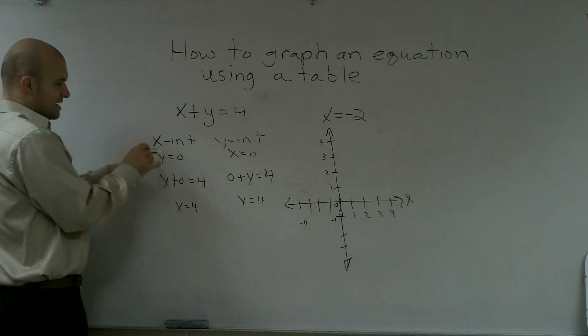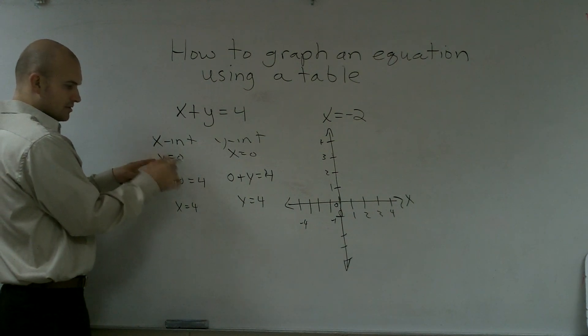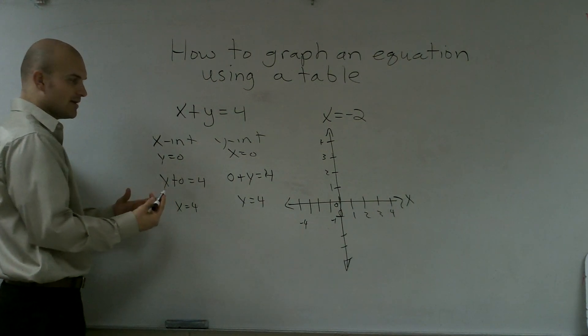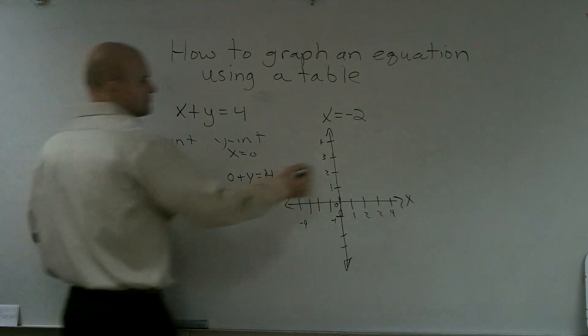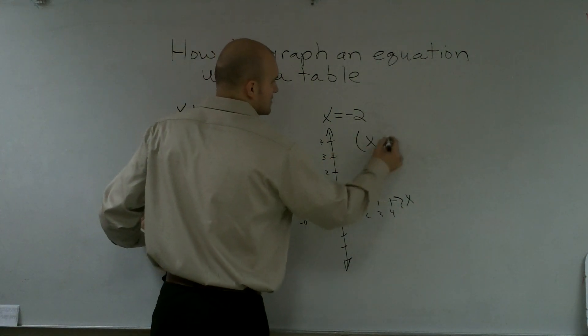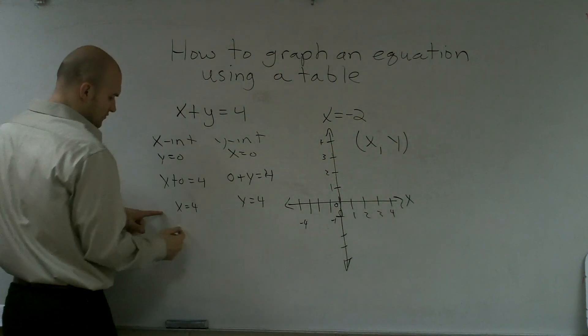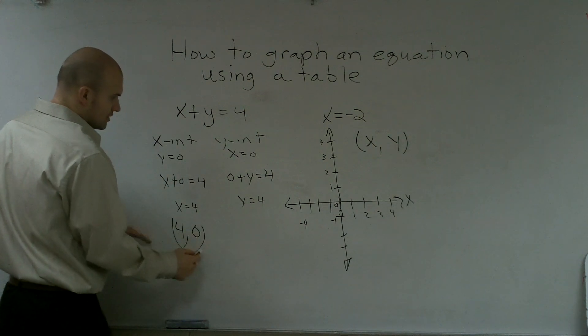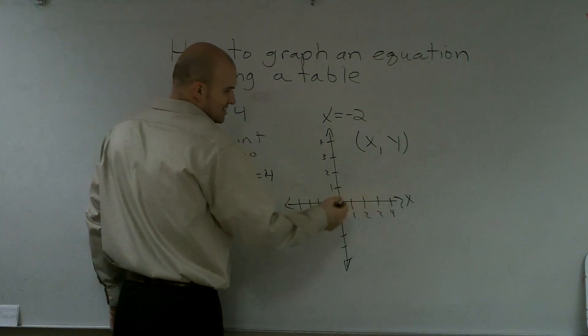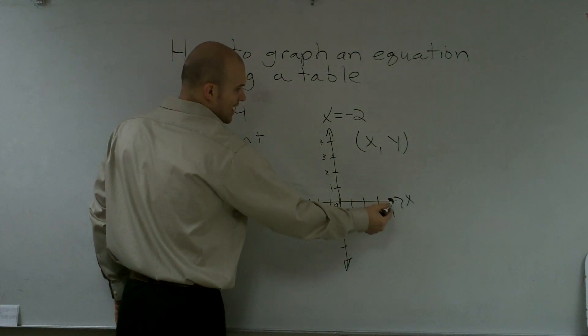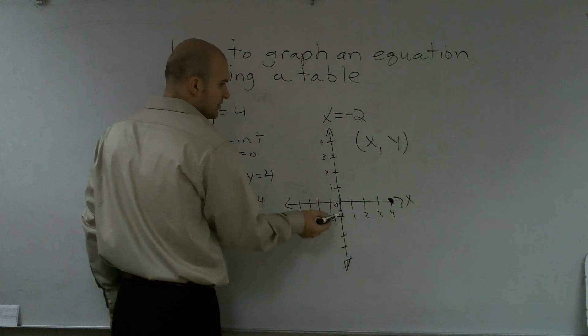Well, if my x-intercept, y equals 0, and x equals 4, how do I write that as a point? We know that points are written as x, y. So x equals 4, y equals 0. So 4 on the x-axis is right here, and y is 0. So I'm not going to go up or down at all on the y.